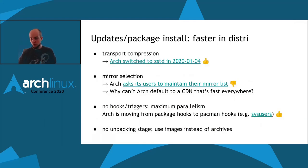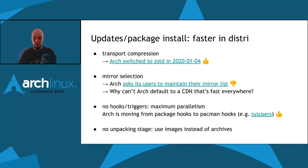So let's talk through why package installation and updating packages can be so fast in DISTRI. One important factor is transport compression — the compression algorithm used when transferring packages from the mirror to the end user's computer. Arch does pretty well here; it switched to Z-Standard in January 2020, which is also the same algorithm DISTRI uses. It's a great algorithm: it decompresses very quickly and the file sizes are great too.